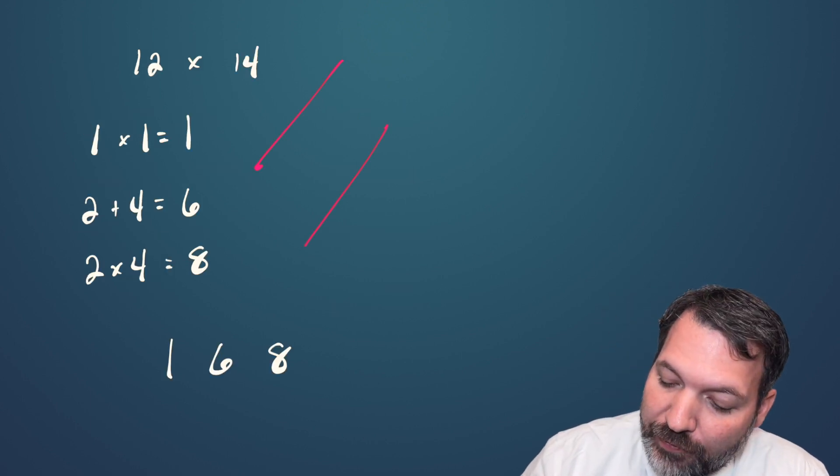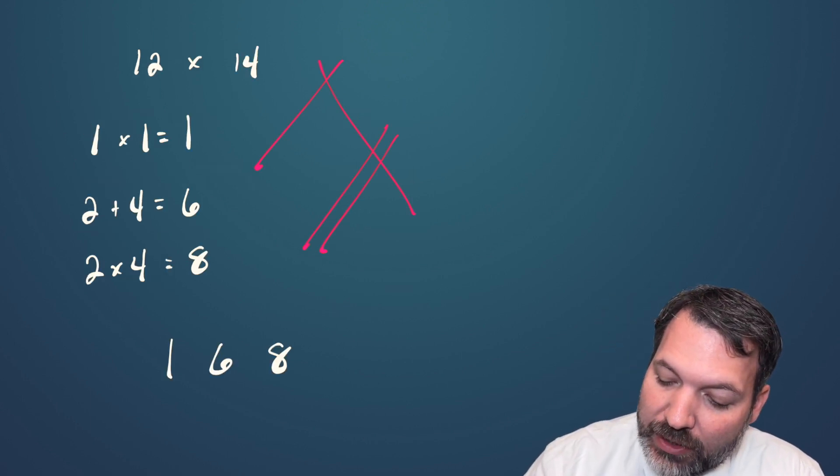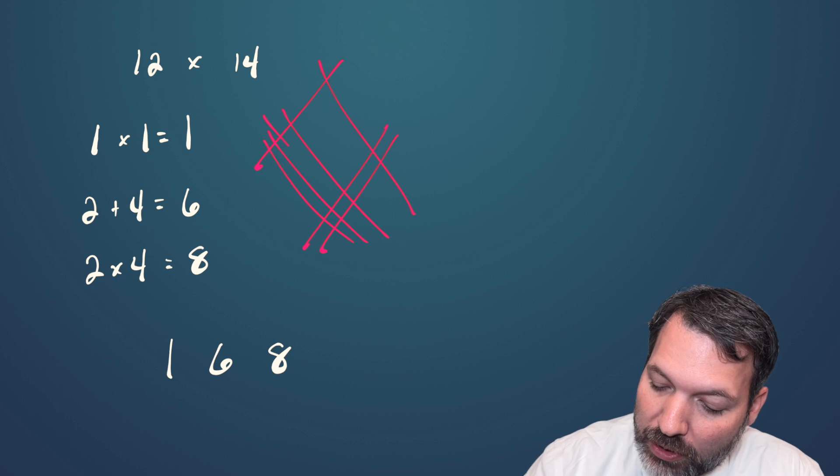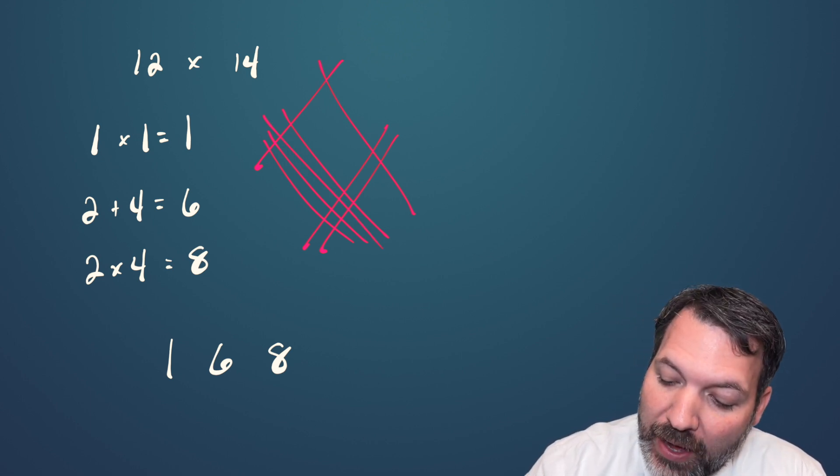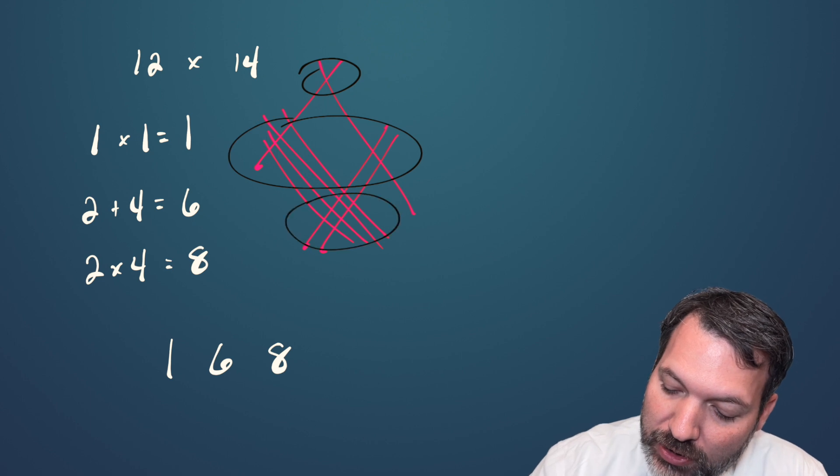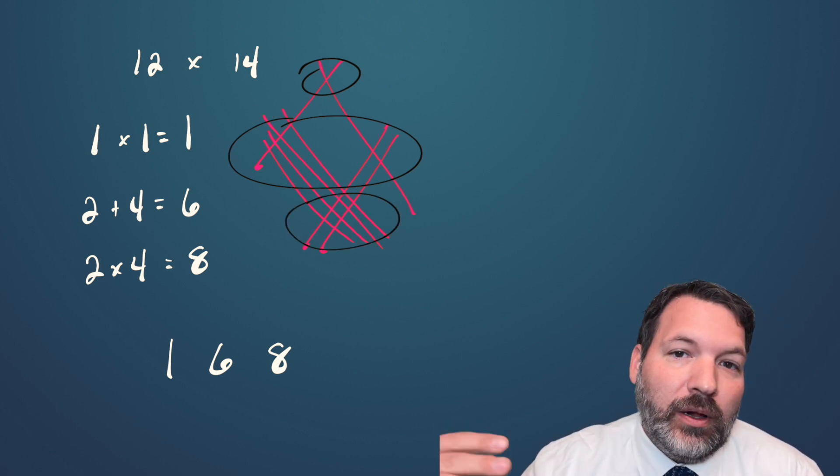The idea is that you represent 12 and 14 with a series of lines. So 12 is going to be one line and then two, and 14 is going to be one line and then four. What you want to look at are the intersections for these lines: top, middle, and bottom.